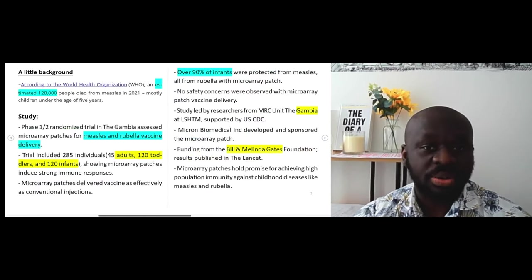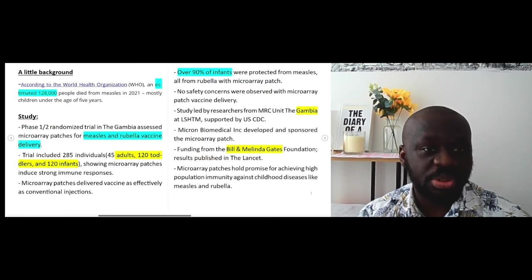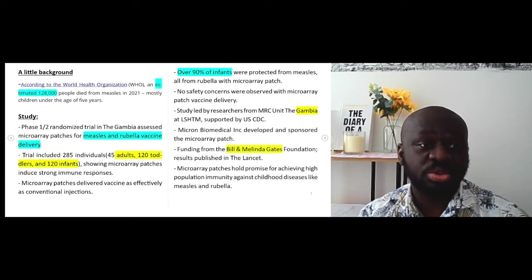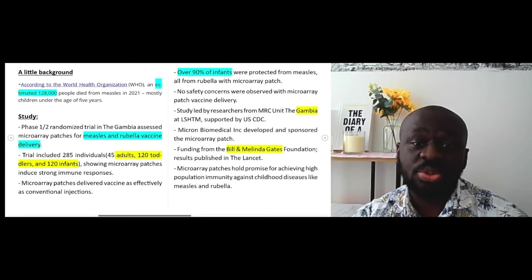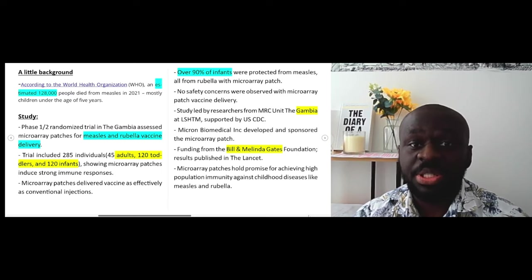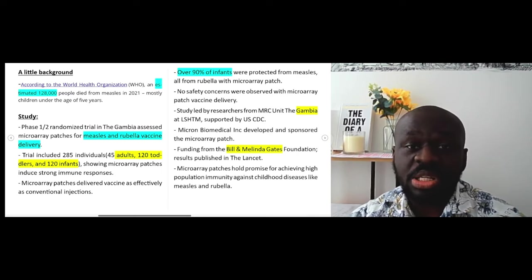So a little background. Why was this conceived? So according to WHO, there was an estimated mortality or death of 128,000 people globally from measles in the year 2021. That's a lot and obviously the mortality can be strongly linked to the absence or the low vaccine uptake rates for measles and other vaccinations.